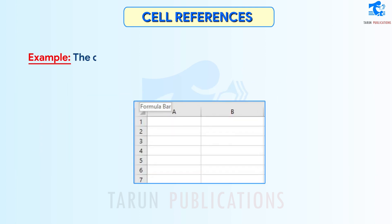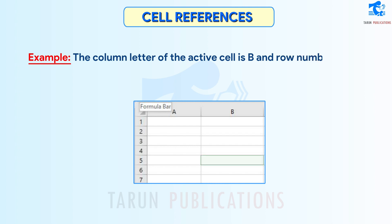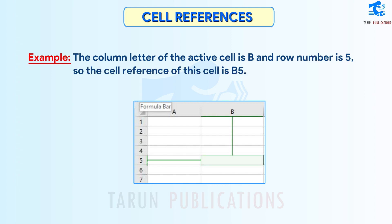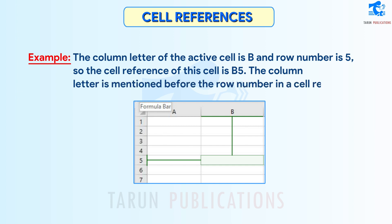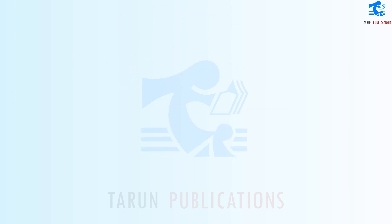For example, the column letter of the active cell is B and row number is 5, so the cell reference of this cell is B5. The column letter is mentioned before the row number in a cell reference.